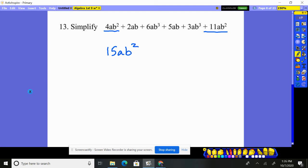Now, I have 2ab. Those will only go with other ab's, which I have right here. 5ab's, so that's how many? 7ab's.